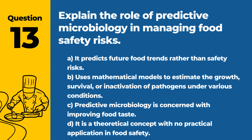Question 13. Explain the role of predictive microbiology in managing food safety risks. a. It predicts future food trends rather than safety risks. b. Uses mathematical models to estimate the growth, survival, or inactivation of pathogens under various conditions. c. Predictive microbiology is a valuable tool for assessing and managing food safety. d. It is a theoretical concept with no practical application in food safety. Answer: b. Uses mathematical models to estimate the growth, survival, or inactivation of pathogens under various conditions. Predictive microbiology is a valuable tool for assessing and managing food safety risks.